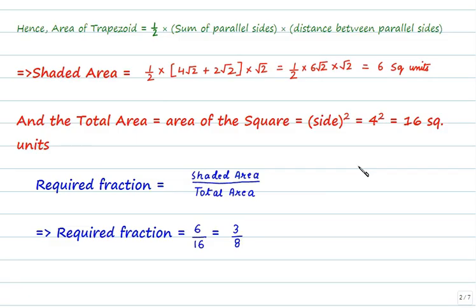The required fraction is shaded area divided by total area that is 6 divided by 16 which is equal to 3/8 so three-eighths of the total area is shaded area.